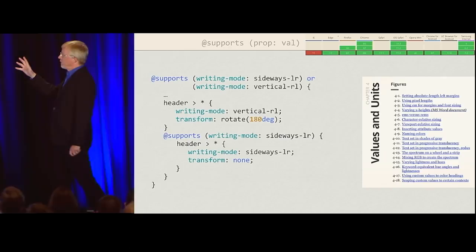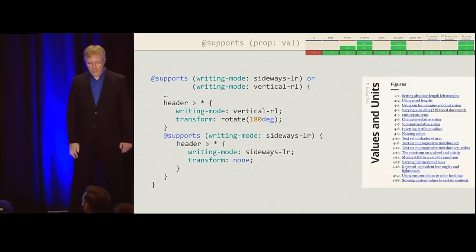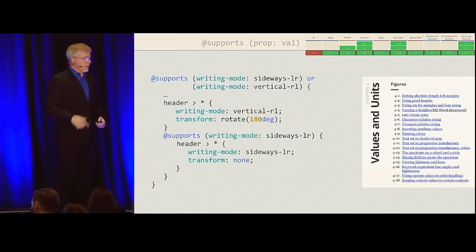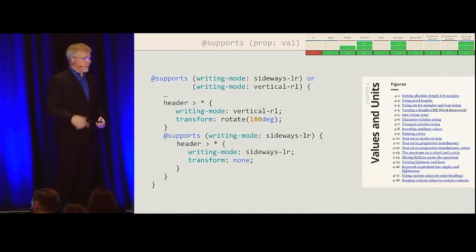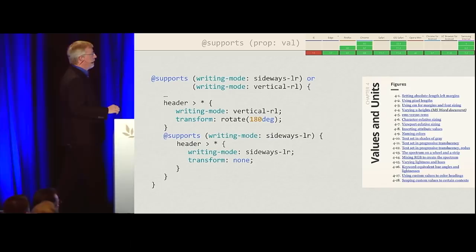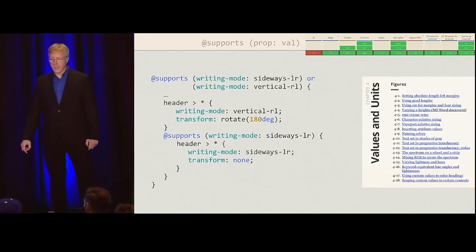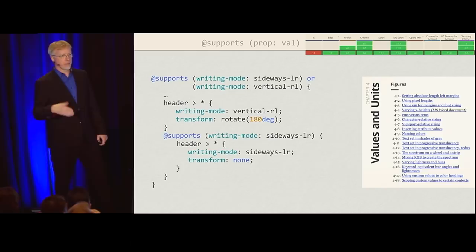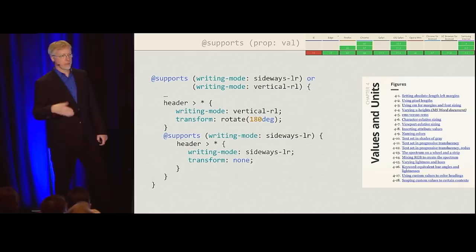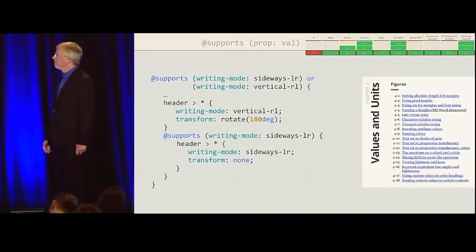I started running into situations where I was doing OR tests and embedding @supports inside to override stuff in the outer block, and it got complicated. So I'd recommend — especially on a team — pick an approach and stick with it, at least for a while. If eventually the team starts to complain it's too constraining, you can decide as a team to switch. But pick one.